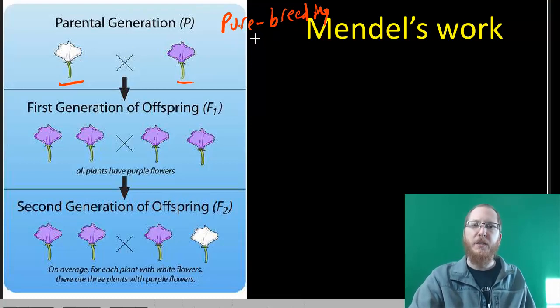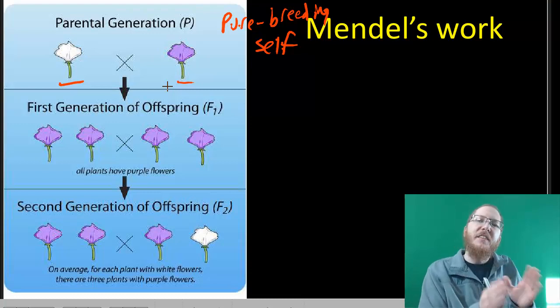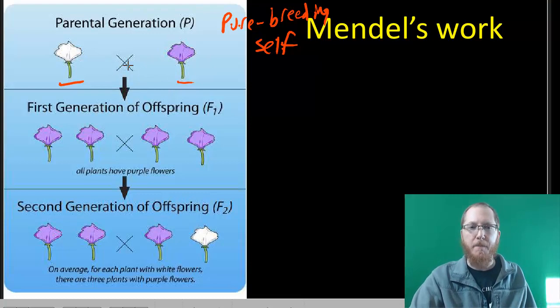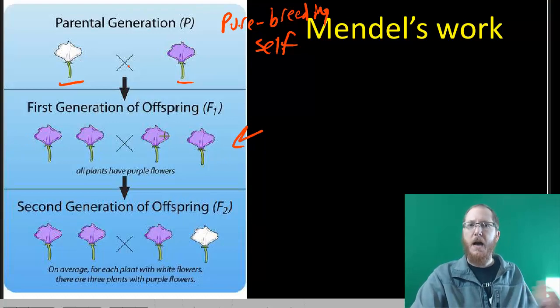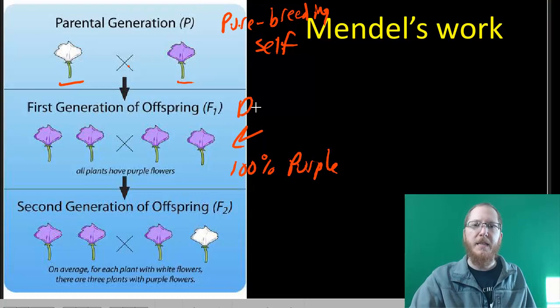He got these pure breeding plants which always self-pollinated to produce identical offspring. And then he said, what happens if I take this guy that always gives me purple offspring, and this guy that always gives me white-flowered offspring, and I cross them? So he cross-pollinated them, and he found that the entire next generation was purple. This was odd. He was expecting blending, so it should have been like light purple, or maybe a mix of purple and white, but he got all purple. So the F1 was 100% purple, which allowed him to realize that purple is dominant. He knew that purple wins essentially. That you've got purple and white, purple wins.